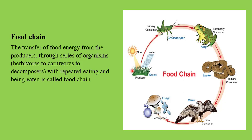Next, what's happening here — the grass is the food for the next consumer. The grasshopper eats the grass, and the next consumer after the grasshopper is the frog. And the frog is consumed by the next level, that is the snake.